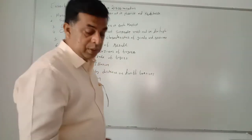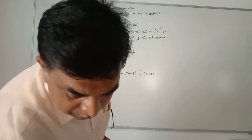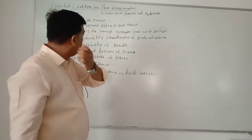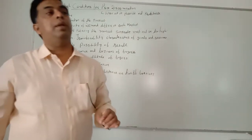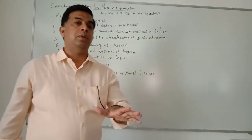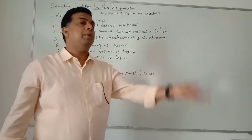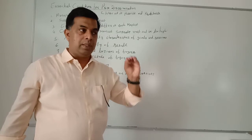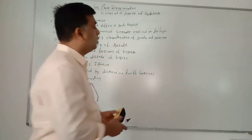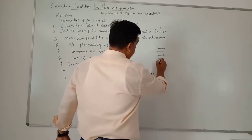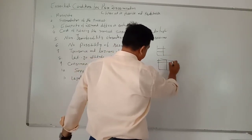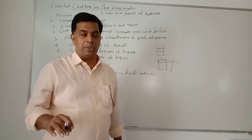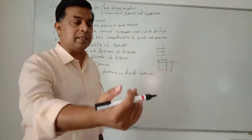The third condition is that the elasticity of demand must be different in each market. This is a very important condition — elasticity of demand should be different in different markets. If elasticity is the same in all markets, price discrimination is not possible. For one market the elasticity of demand should be perfectly inelastic, and for another market it should be more elastic — only then is price discrimination possible.